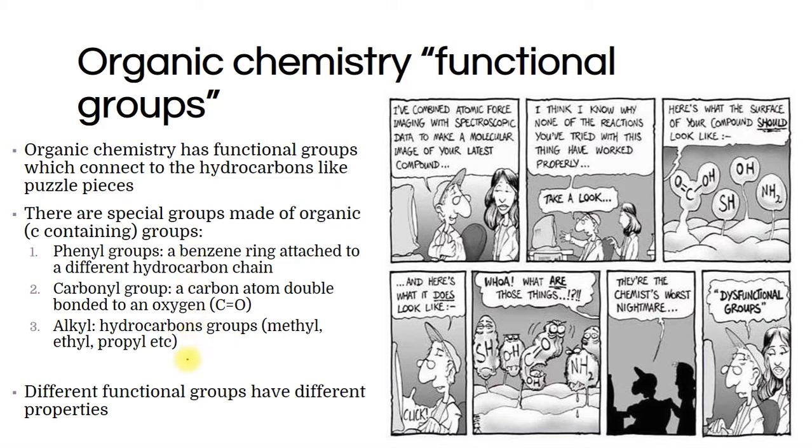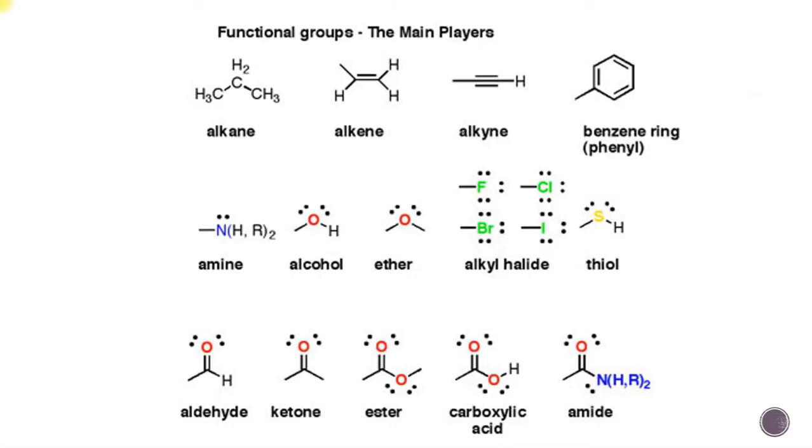We have a couple of main categories. Phenyl groups are when we have a benzene ring that's attached to a bunch of hydrocarbon stuff. Carbonyls are that C double bond O that we've been talking about. And alkyl refers to like a CH3 group, a methyl group hanging off, or an ethyl CH2CH3, or a propyl CH2CH2CH3. The reason we learn about them is because different functional groups do different things.